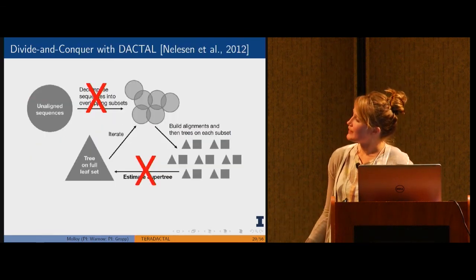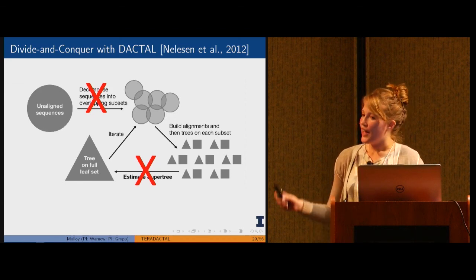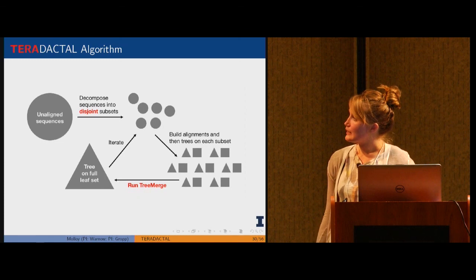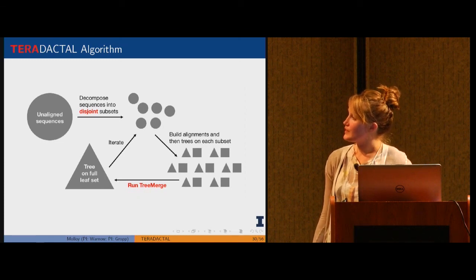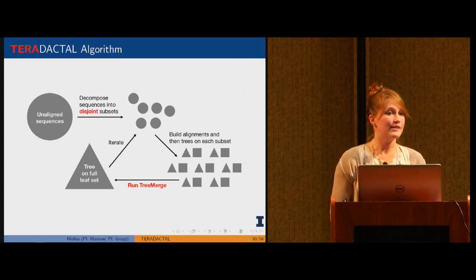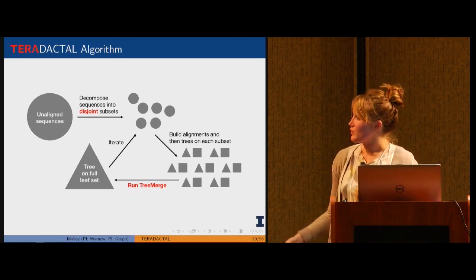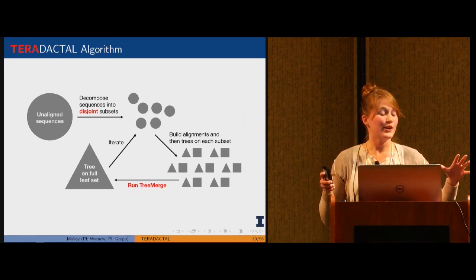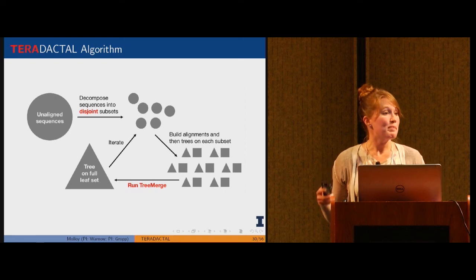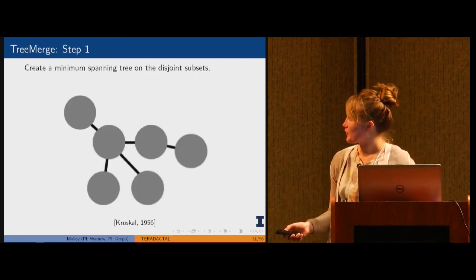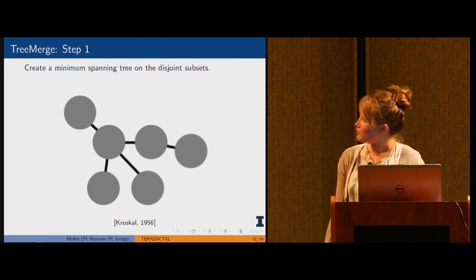This is the approach that we came up with. We basically take the DACTAL algorithm and cut out two key steps. Instead, we're going to decompose the sequences into disjoint subsets, so there's no shared leaves on the trees that are built on these disjoint subsets. Then we came up with a new algorithm called TreeMerge to merge these disjoint trees back together. We call this algorithm pterodactyl.